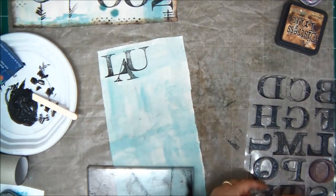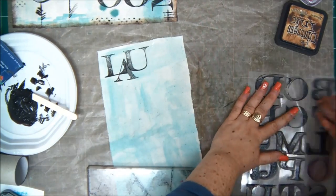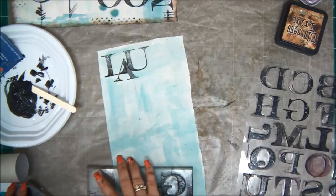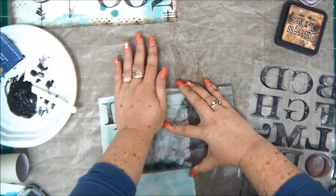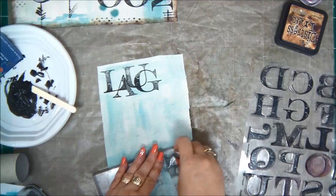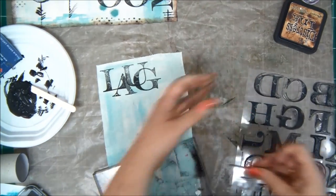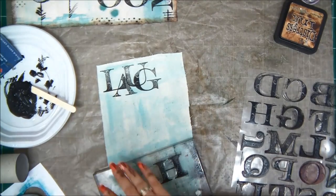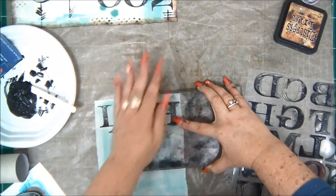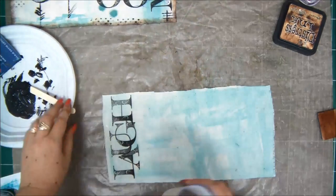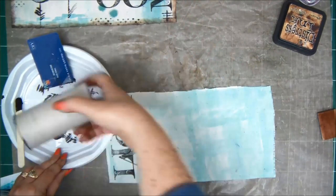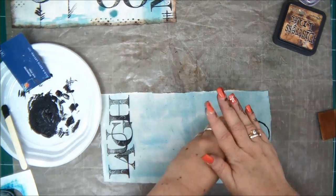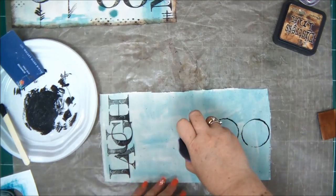So when you stamp on fabric, make sure to use ink that is suitable for fabric. For example, distress ink would not work. I'm not going to wash the mini album, but still I need it to be slightly or more than slightly permanent. So make sure that you use the appropriate ink that you can heat set and that it will be permanent on your fabric.